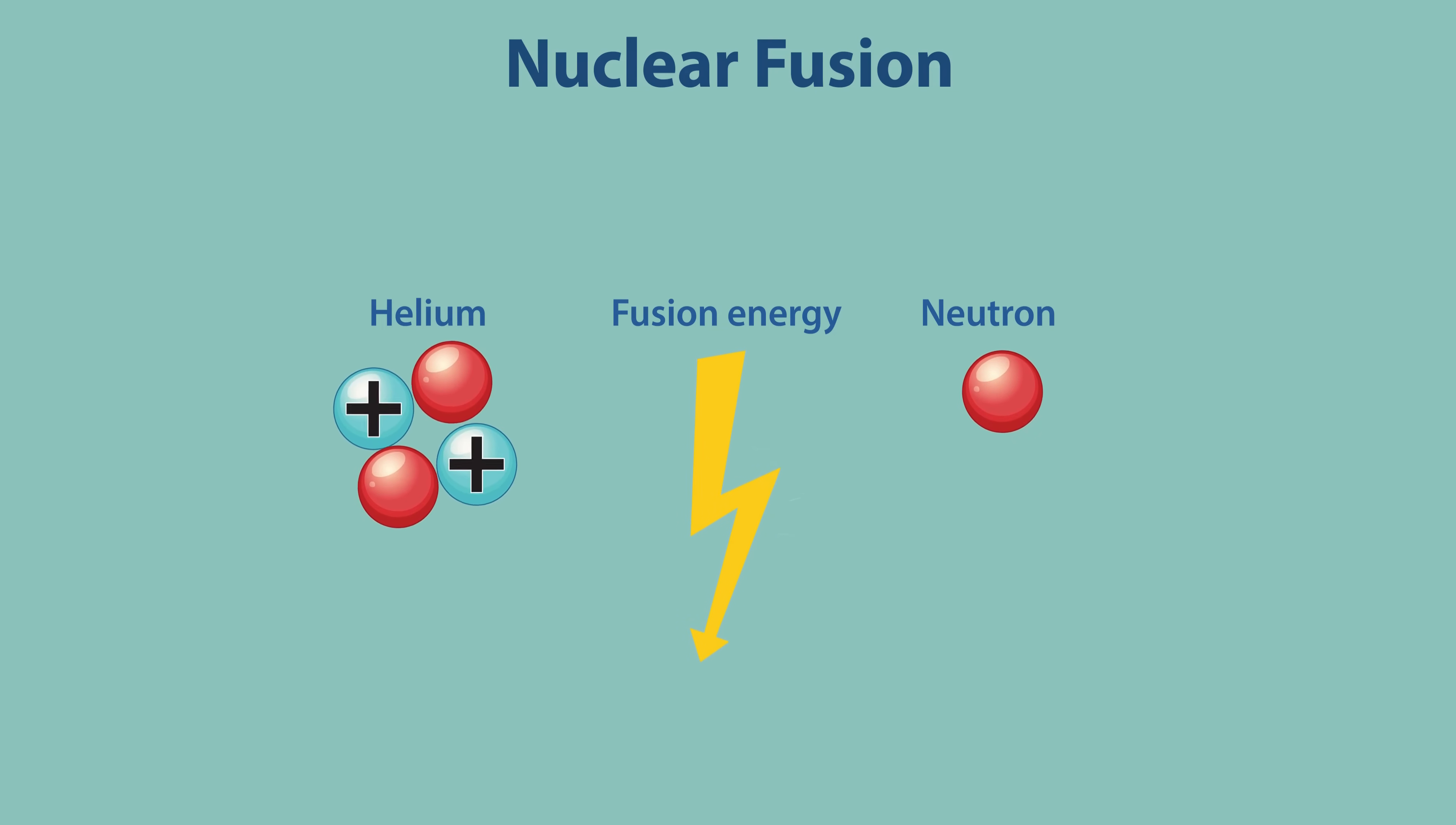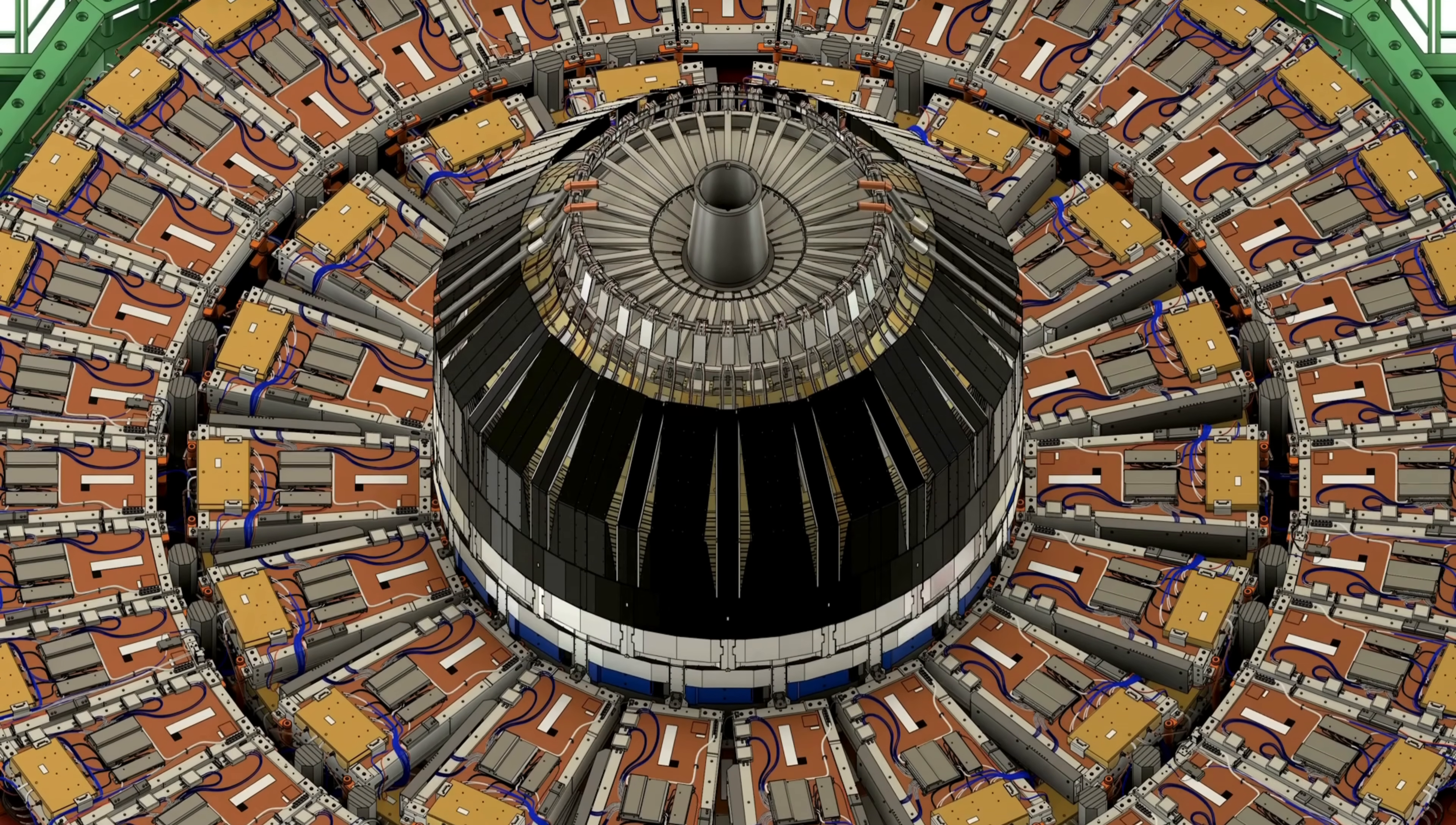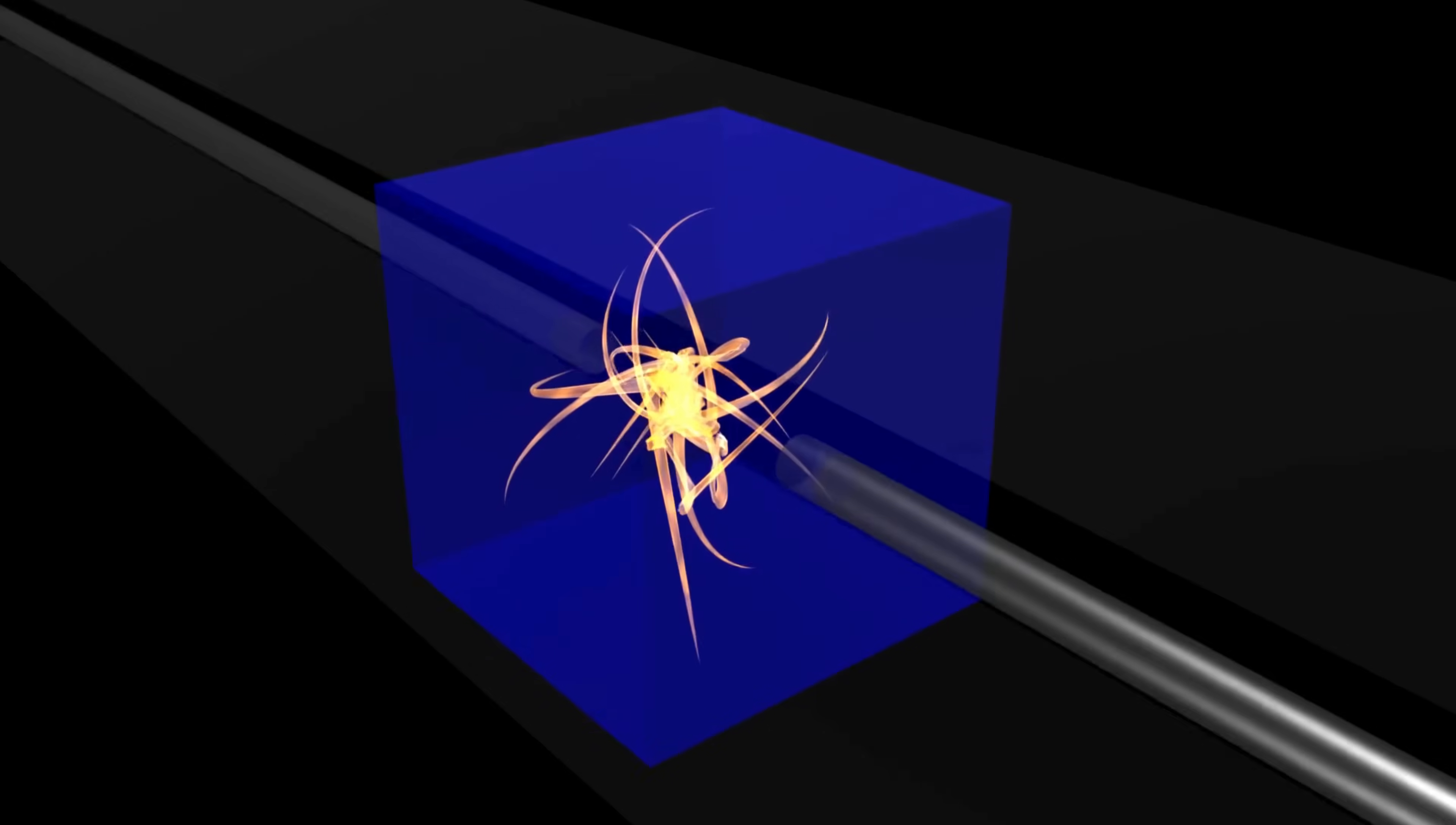The vice versa is also true, and it's one of the most important and powerful ideas in modern physics. Energy can also be converted into mass. In machines like the Large Hadron Collider, scientists accelerate particles such as protons to speeds very close to the speed of light.